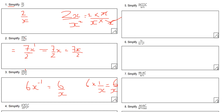This next one is a bit more tricky. a squared over a squared equals 1. b cubed divided by b cubed equals 1. c squared divided by c to the 4 gives c to the minus 2. So the answer is a times c to the minus 2, or written as a over c squared.